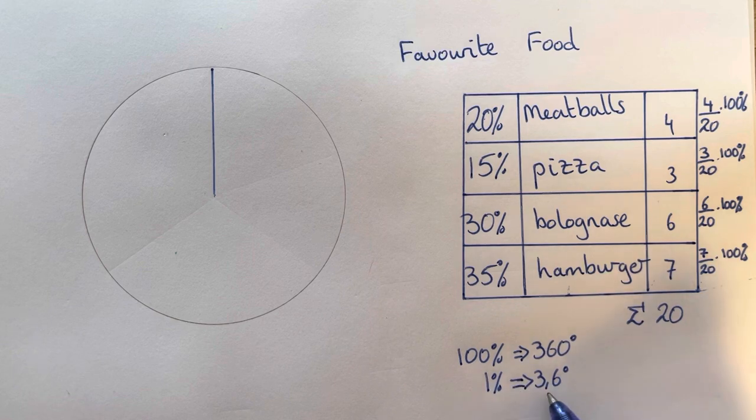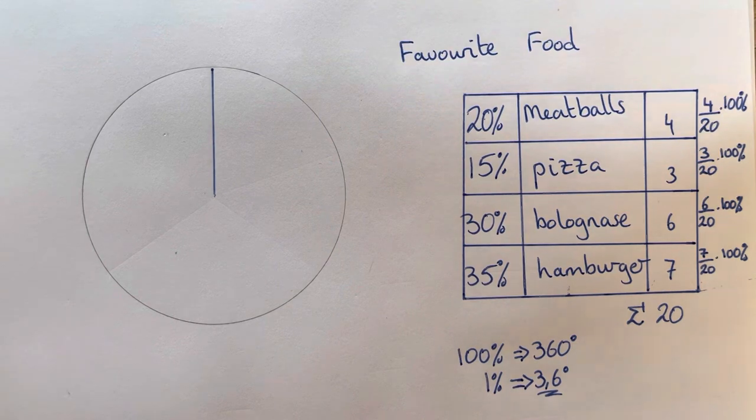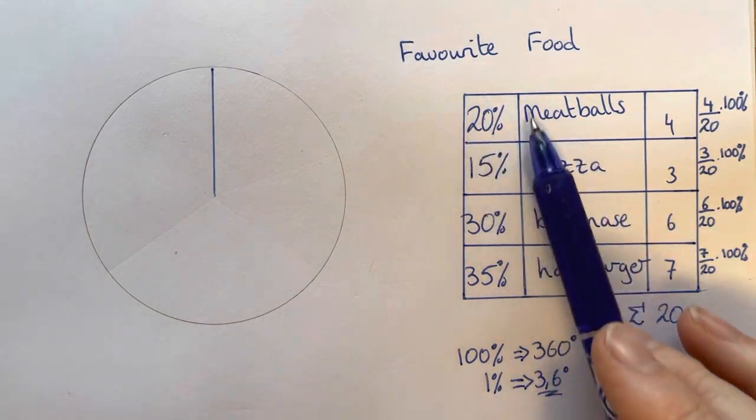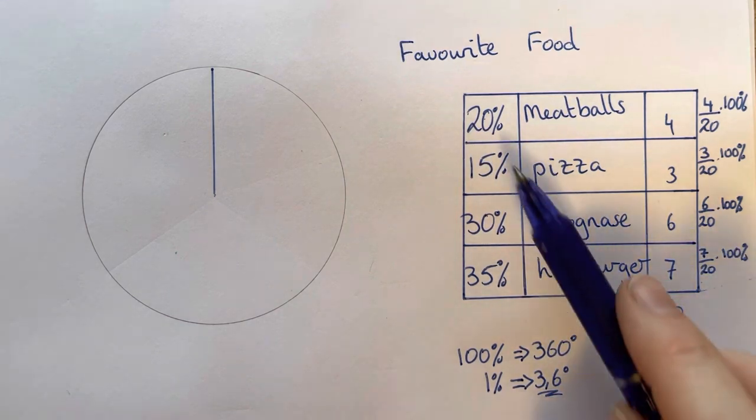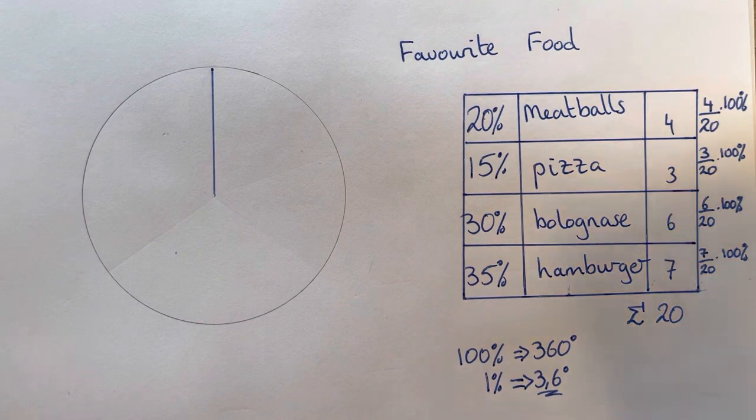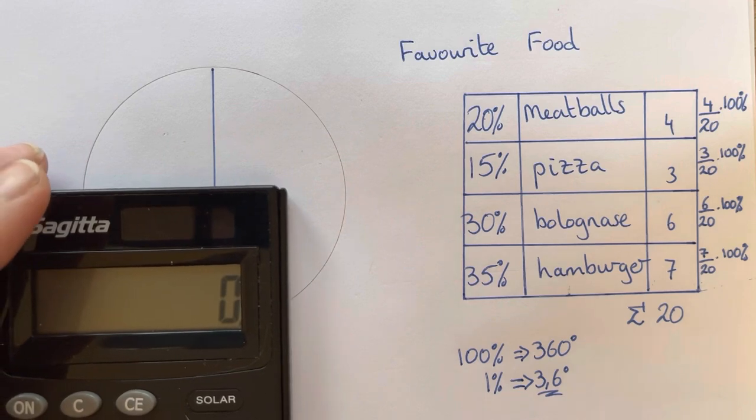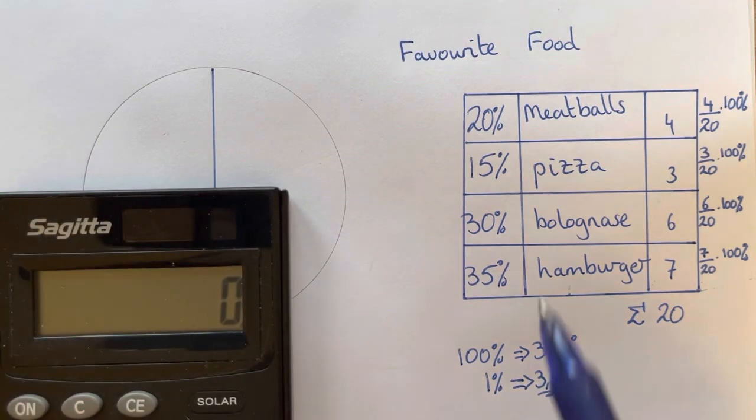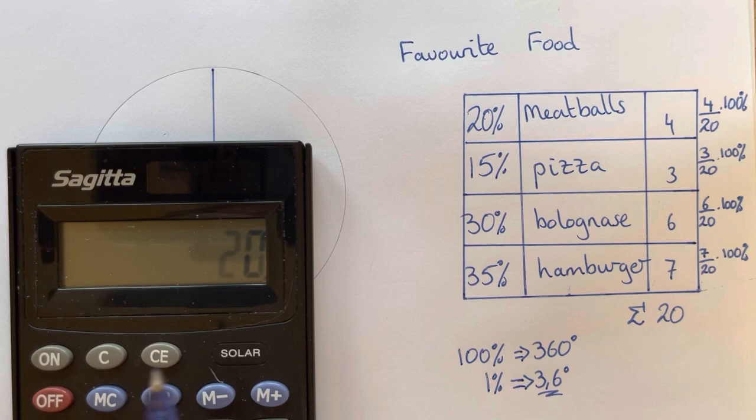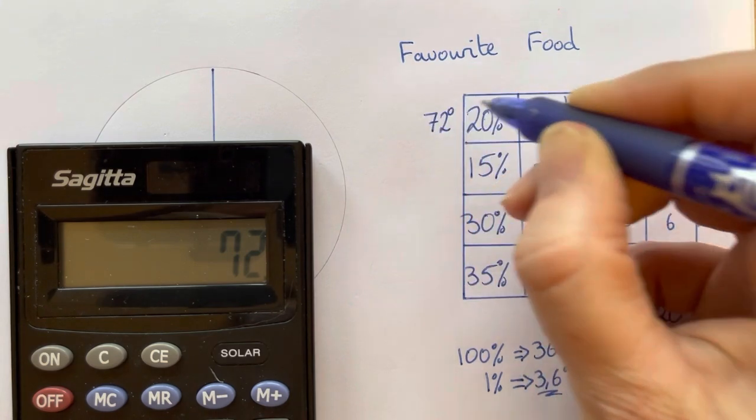So every one percent of our circle would be 3.6 degrees with our protractor. So now we can fairly easily calculate how many degrees 20 percent must be. Well, it will be 20 times 3.6 because one percent is equivalent to 3.6 degrees. So if we've got 20 percent we would get 20 times 3.6 which would give us 72 degrees.